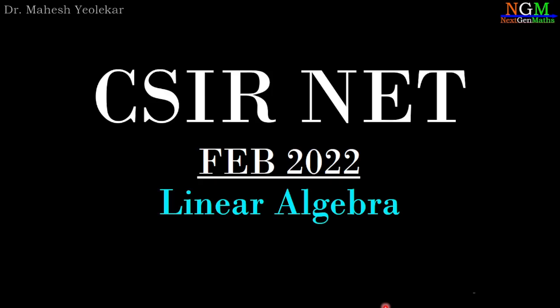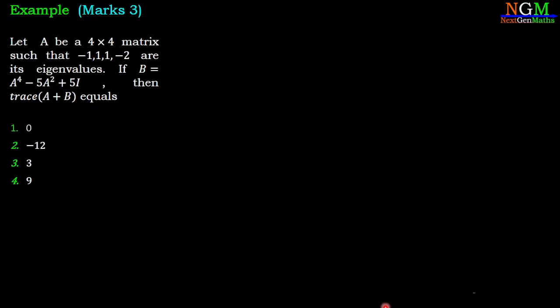In this video we are going to discuss the CSIR Feb 2022 problem of linear algebra. The question is: let A be a 4×4 matrix such that -1, 1, 1, -2 are its eigenvalues. If B = A⁴ - 5A² + 5I, then the trace of A + B equals. The options are: first option 0, second option -12, third option 3, and fourth option 9.